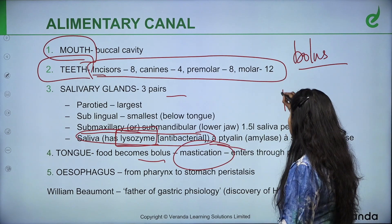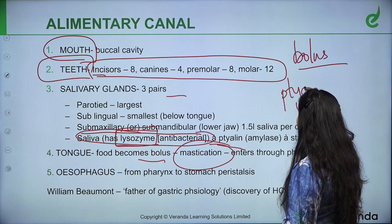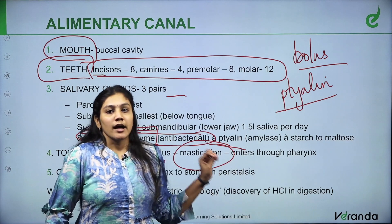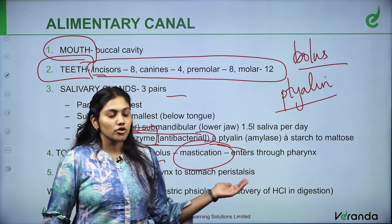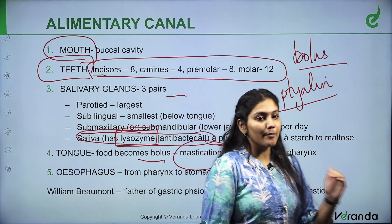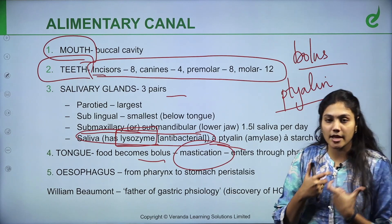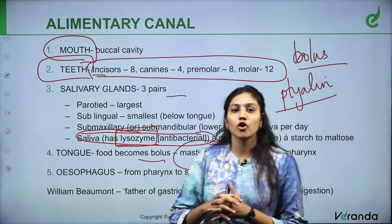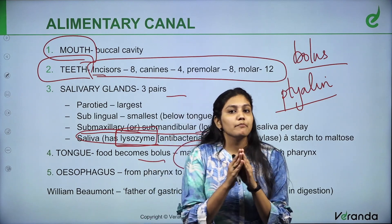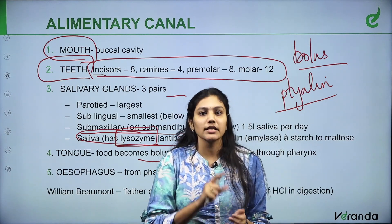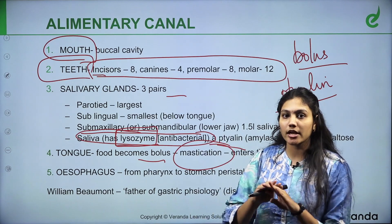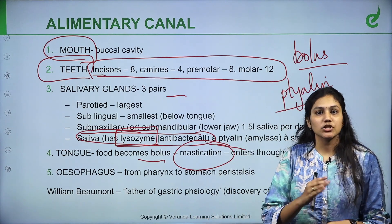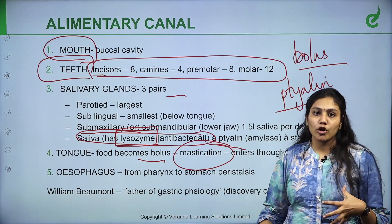Ptyalin is a compound which has amylase — it's also called salivary amylase. Amylase enzyme acts on carbohydrates, which we also call starch. That will break down. So, amylase enzyme works to break down complex starch into simpler molecules.